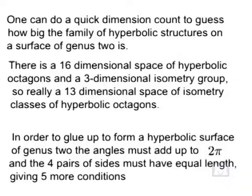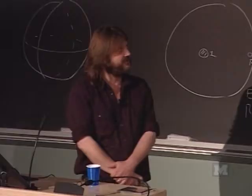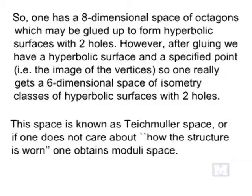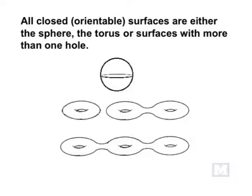There's a six-dimensional space of hyperbolic structures you can put on a surface with two holes. There's a point of contact with string theory — the space of structures on surfaces comes up very naturally in string theory. It turns out these are all the surfaces you can make with construction paper in three dimensions: the sphere, the torus with one hole, the surface with two holes, three holes, four holes, et cetera.